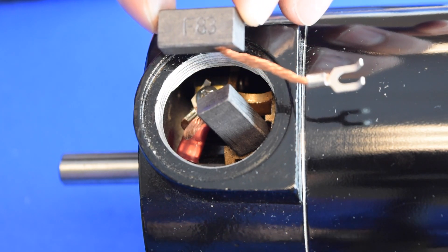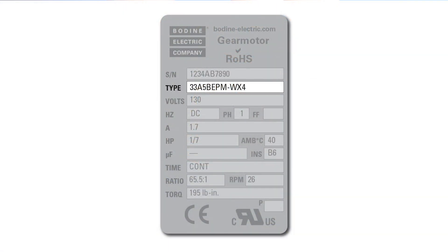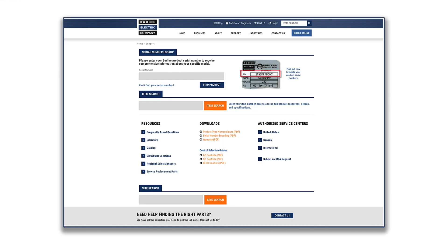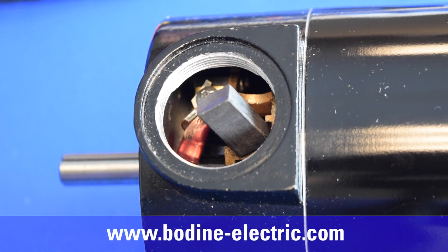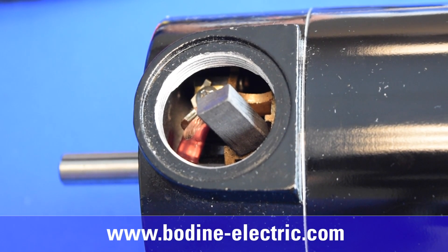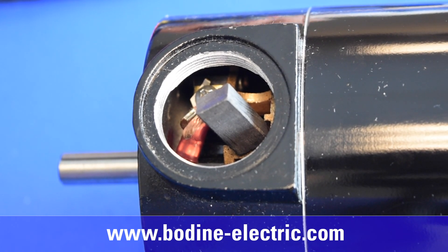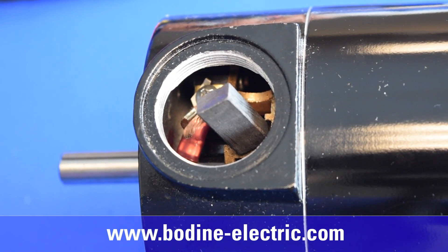If new brushes are required, get the Bodine motor type and serial number from the motor nameplate and then visit our website to look up the brush and spring part numbers via our support page search tool. You can purchase brushes from an authorized Bodine distributor or directly from our website at www.bodine-electric.com.